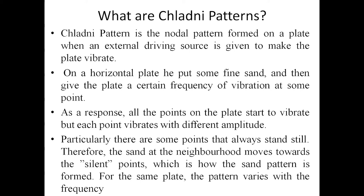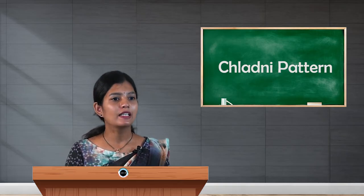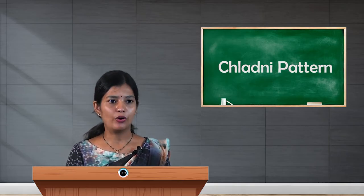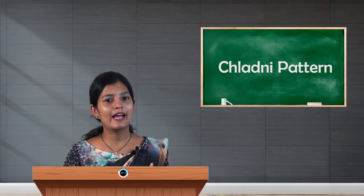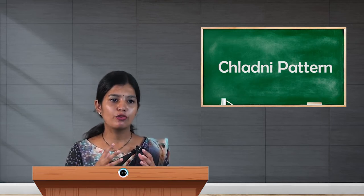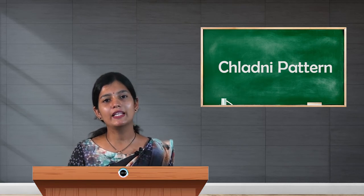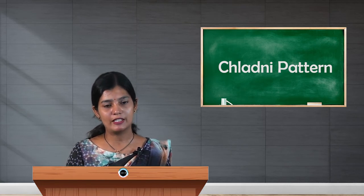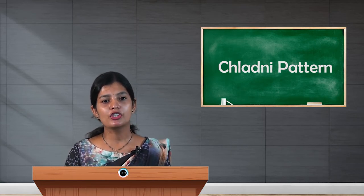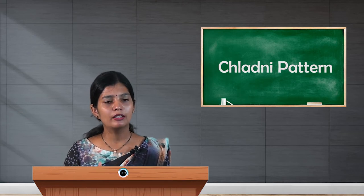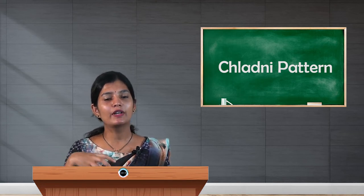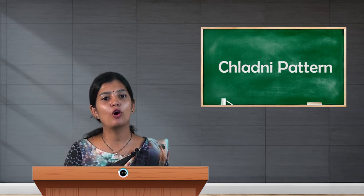The sand in the neighborhood moves towards the silent points. So the points which are always still are known as silent points, and the neighboring sand will move towards them — which is how a sand pattern is created on a vibrating surface. For the same plate, the pattern varies with frequency, so as the frequency changes, different sand patterns are formed.